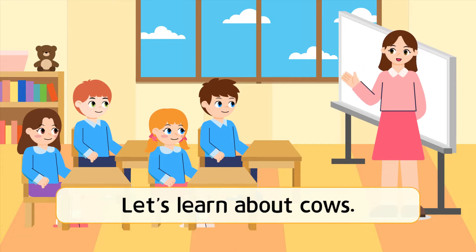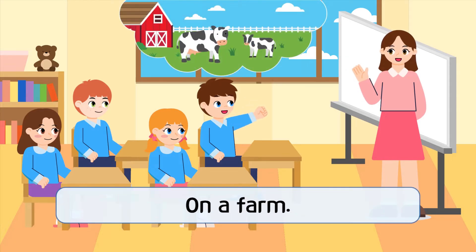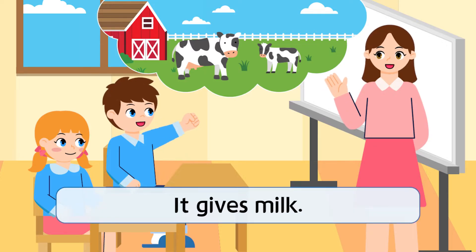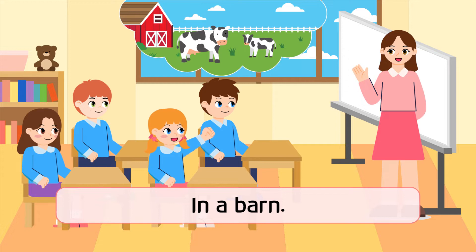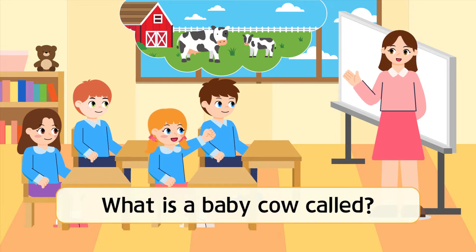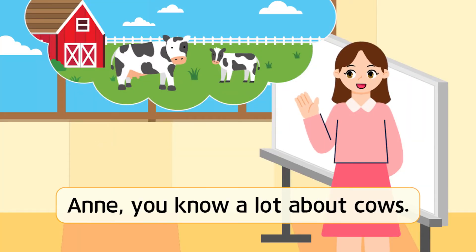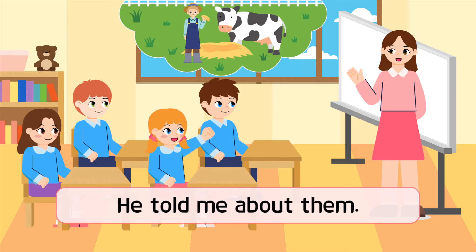Conversation. Let's learn about cows. Where can you see a cow? On a farm. What does a cow do on a farm? It gives milk. Where does it sleep? In a barn. What is a baby cow called? Calf. And you know a lot about cows. My grandfather has cows. He told me about them.